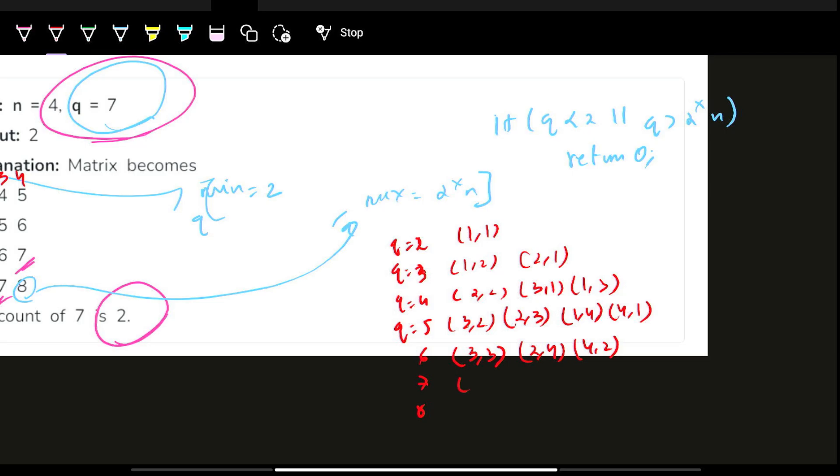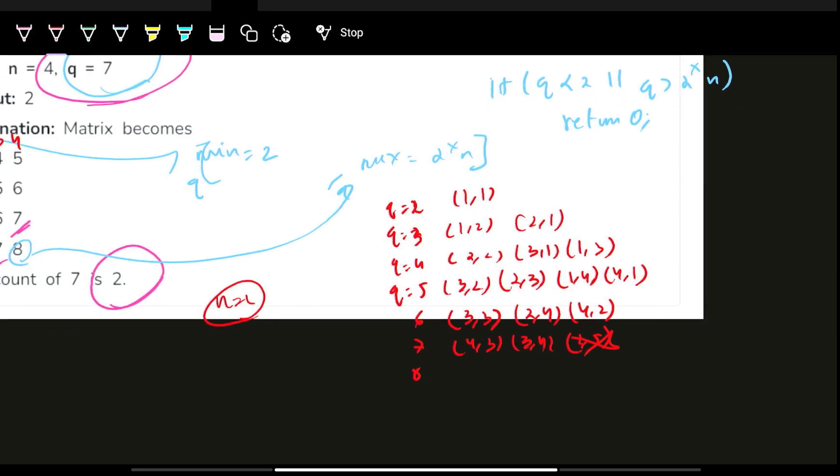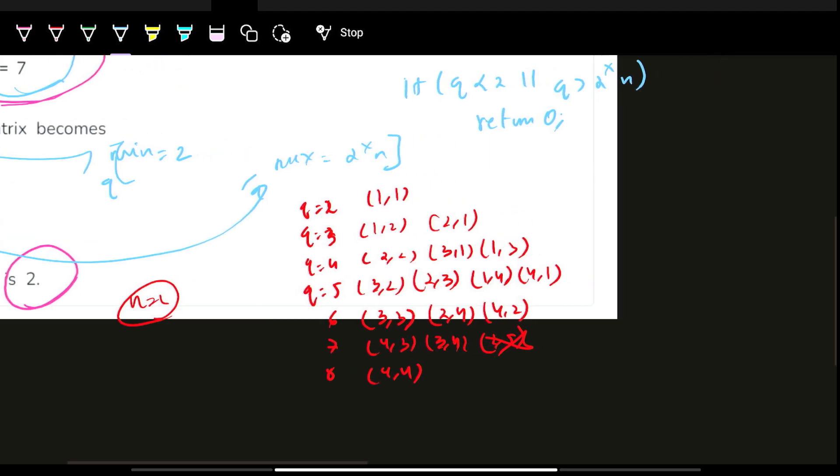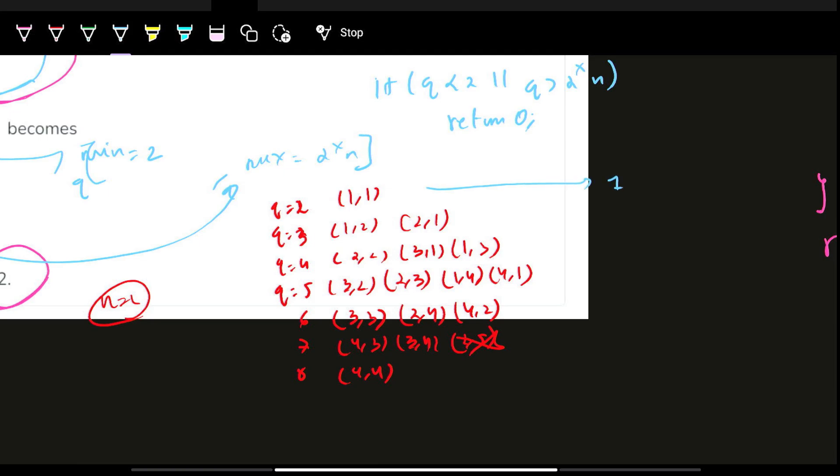Similarly, for 7, it could be (4,3) and (3,4). Can we take (2,5) as well? We can't because the range of n is 4, so we cannot take this one. And for 8, it would be nothing but (4,4), right? Now, let's write the answer. For Q=2, the answer is 1. For Q=3, the answer is 2. For Q=4, the answer is 3. For Q=5, the answer is 4, right?